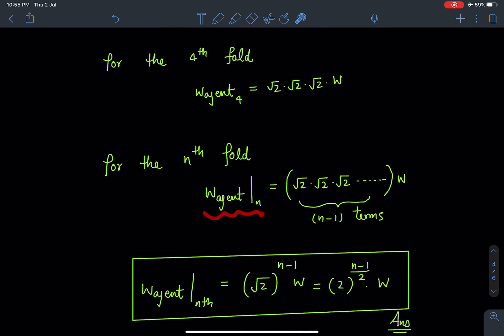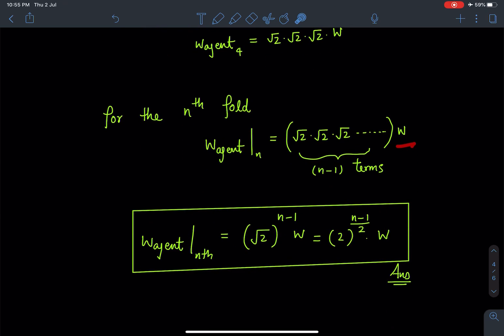So similarly for nth fold I can write this work done, work done by agent in nth fold, it will be √2 times √2 times √2, we'll keep repeating it up to n-1 terms. I hope you are getting this idea, times W. So which I can rearrange and I can write it as 2^(n-1)/2 times W. This is the answer for second part for us.